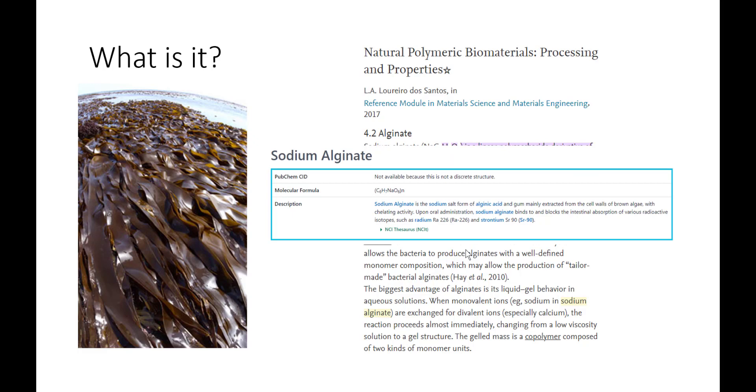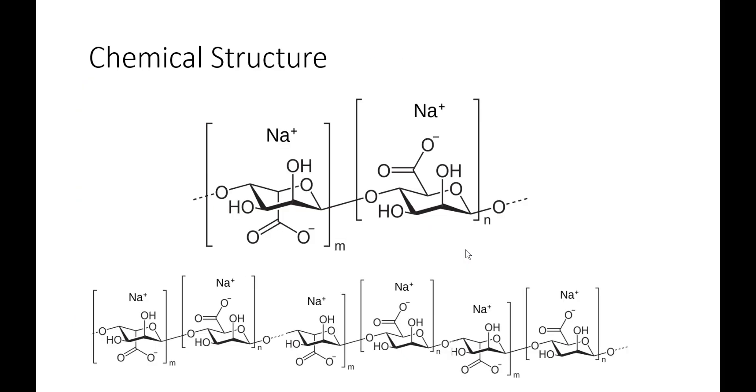According to NCI Thesaurus, you can actually use sodium alginate as a means of blocking intestinal absorption of various radioactive isotopes. However, we're not going to use it like that.